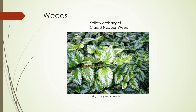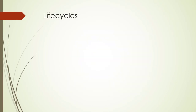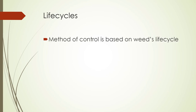Some pests are weeds. Here we have yellow archangel, which is a class B noxious weed in Washington State. When managing weeds, you have to talk about their life cycles. You have annual weeds, biennial weeds, and perennial weeds.